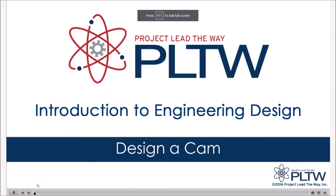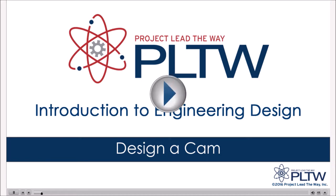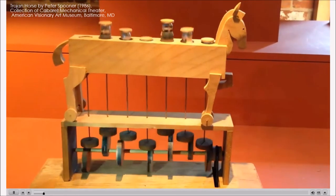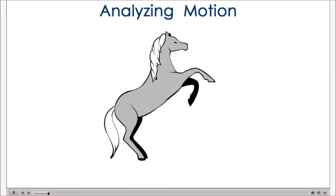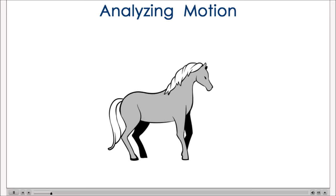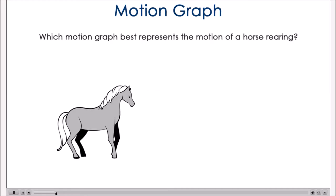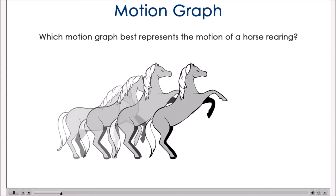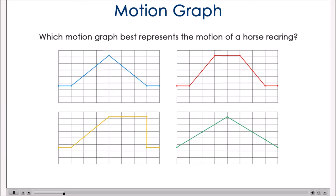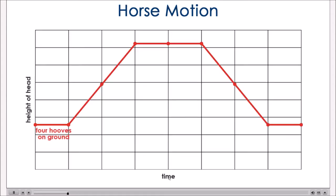Cams are frequently used in mechanisms to cause linear motion. In this video we will investigate how to design and construct a cam to create the specific motion we want. The first step is to analyze the motion you would like to create; once identified, you can represent it graphically. Suppose you want to replicate the motion of a horse rearing up onto its back legs — the front hooves begin on the ground, move up to the top, the horse remains upright momentarily, then the hooves return to the ground. Which of these motion graphs best represents the motion of the horse's head and chest?